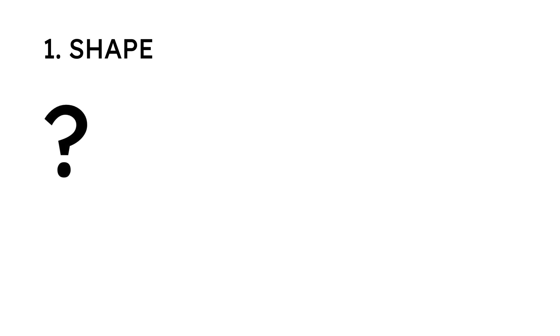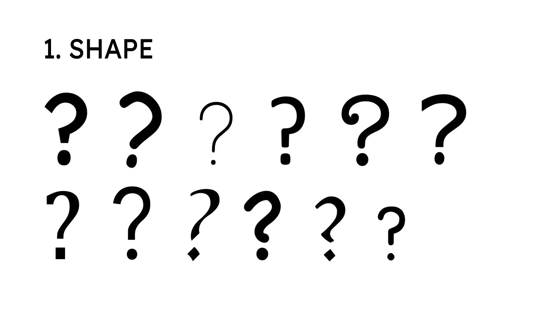Let's start with what it looks like, or its shape. This is a question mark. What do you notice about how it looks? I would say it's part of a circle with a little line going down and then a dot underneath. Let me show you a few more versions of the question mark using different fonts. All these are question marks! Look at them. What do you notice? They're sort of the same and a little bit different.